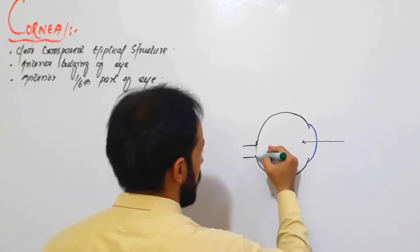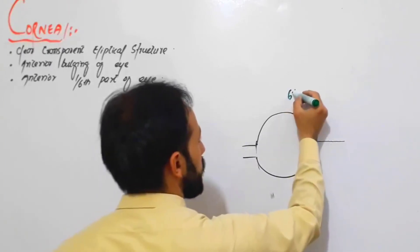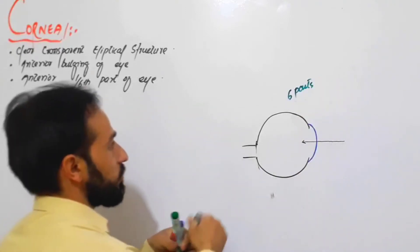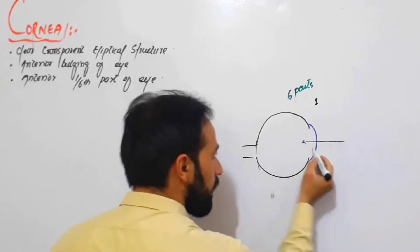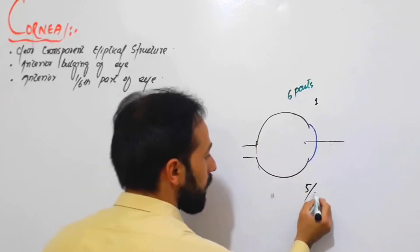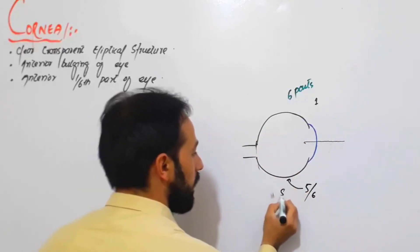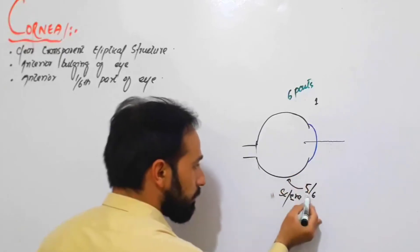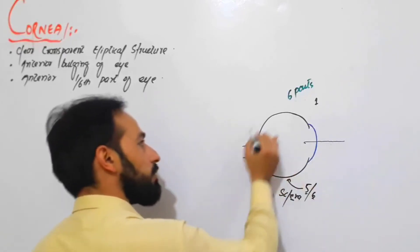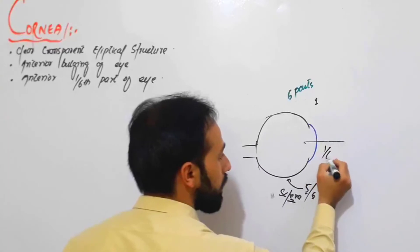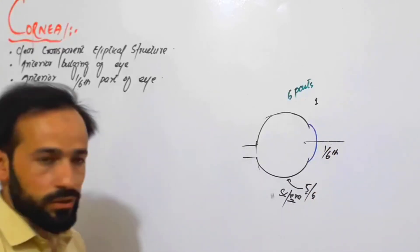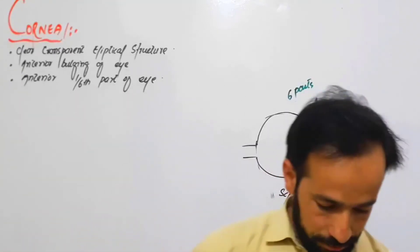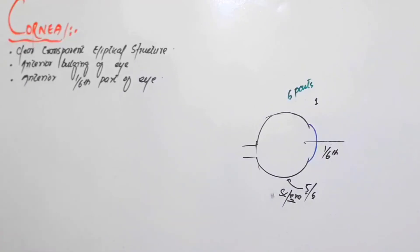The whole eye is divided into six parts. One part is the cornea — the anterior one-sixth — and the posterior five-sixths is the sclera. We will discuss the sclera in the next lecture. So: posterior five-sixths of the eye is sclera, and the anterior one-sixth part of the eye is called the cornea.